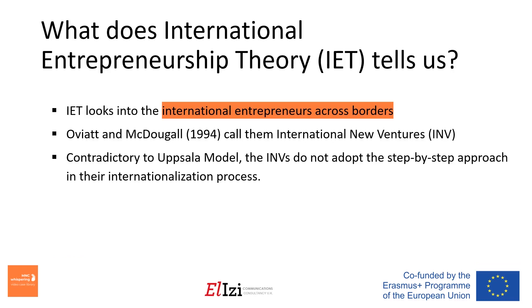On the other hand, the International Entrepreneurship Theory, or IET, looks into international entrepreneurs across borders, analyzing how they act. Oviat and McDougall call them International New Ventures, or INVs, defining them as business organizations that, from inception, seek to derive significant competitive advantage from the use of resources and the sales of outputs in multiple countries. They point out, contradictory to what the Uppsala model tells us, that INVs do not adopt a step-by-step approach in their internationalization process. Instead, they start internationalization efforts much earlier on and all at once.